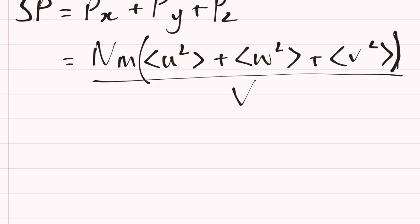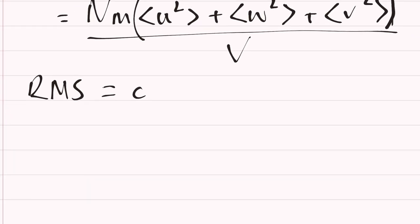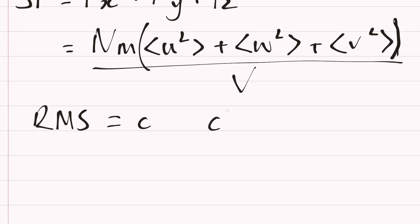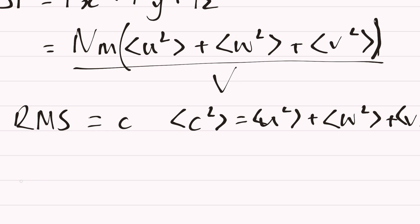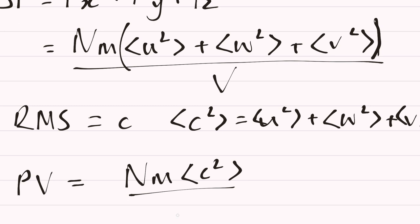To get rid of the dimensions and talk about just the average speed of the particles, we use the mean square speed, or RMS speed, called c. So c² equals u² + w² + v² — which reminds you of Pythagoras. Moving the 3 and the V across, we get PV = Nmc² over 3.